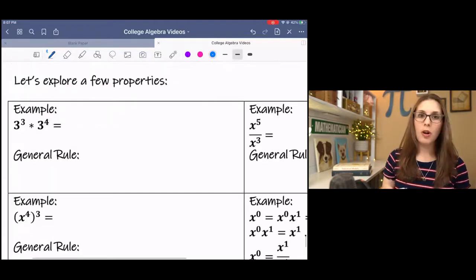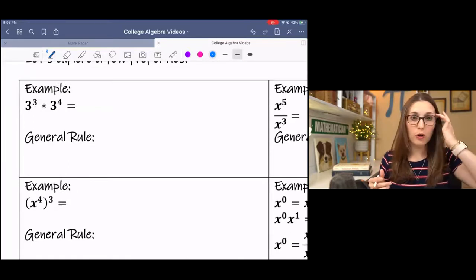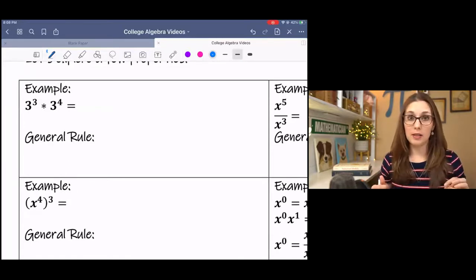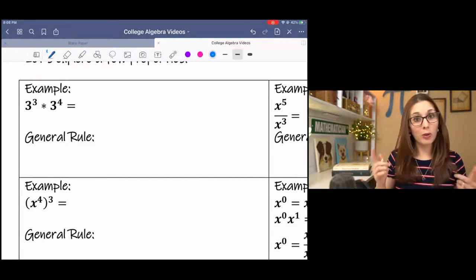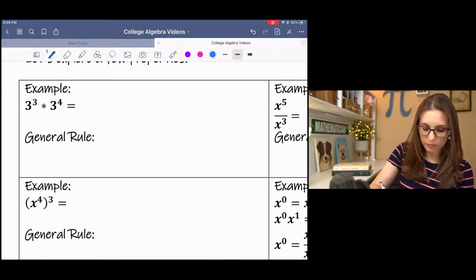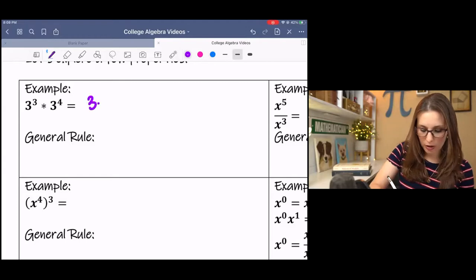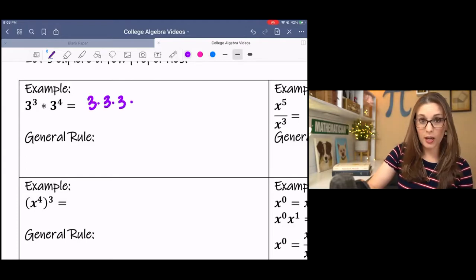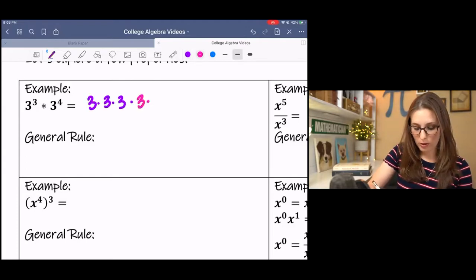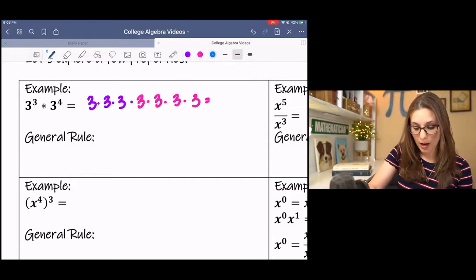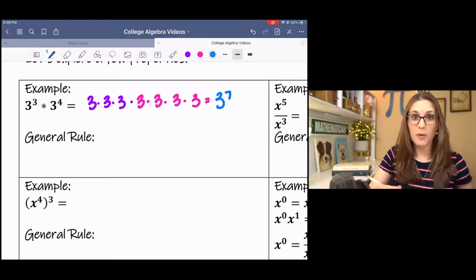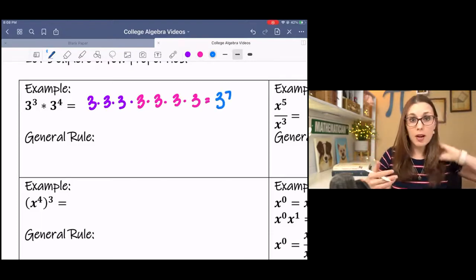In the first example, I have 3 to the third times 3 to the fourth. They have the same base, so I can collapse these together using a specific rule. 3 to the third is 3 times 3 times 3, and 3 to the fourth is 3 times 3 times 3. If we collapse that back, we get 3 to the seventh because it's being multiplied seven times.